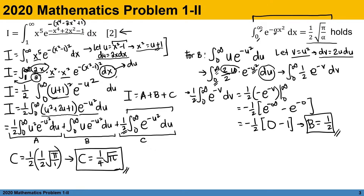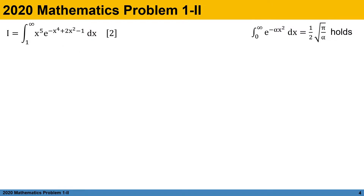The most difficult group to integrate is Group A. We have Group A as one half of the integral from 0 to infinity of u squared e to the negative u squared du. We use another transformation: let y equal u squared, such that u equals the square root of y.